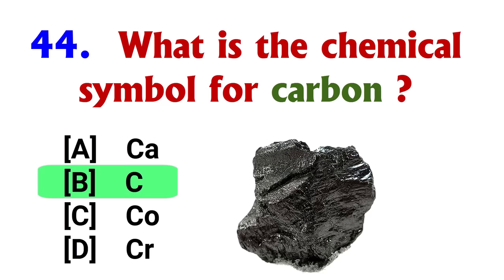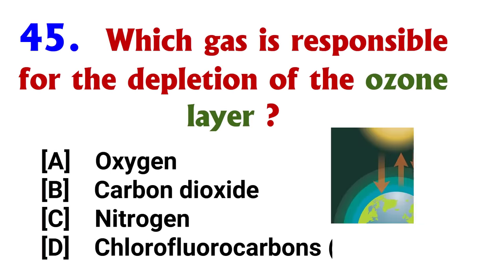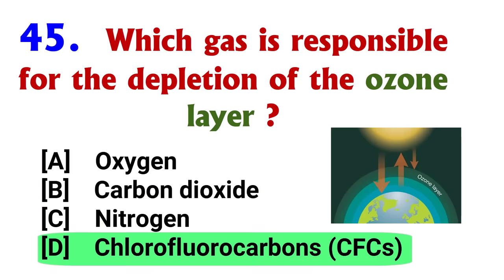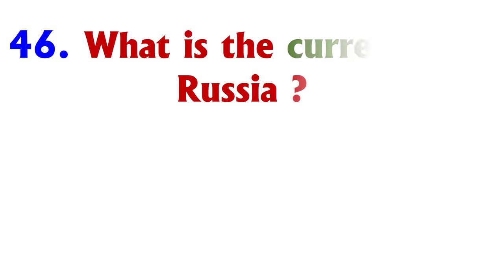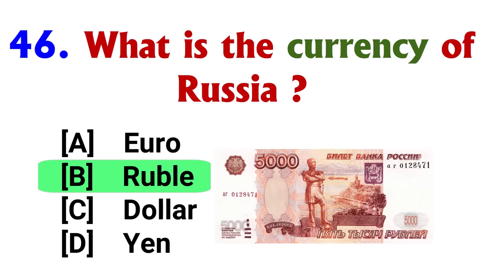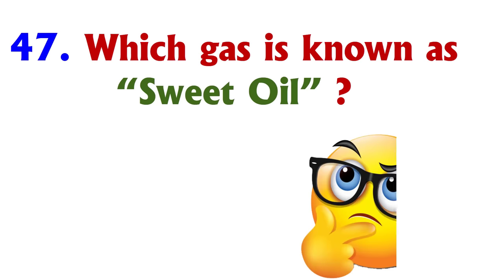What is the chemical symbol for carbon? Answer: option B, C. Which gas is responsible for the depletion of the ozone layer? Answer: option D, Chlorofluorocarbons. What is the currency of Russia? Answer: option B, Ruble.